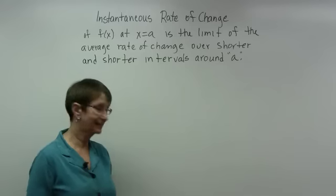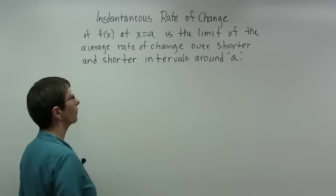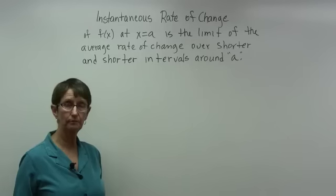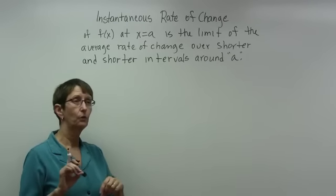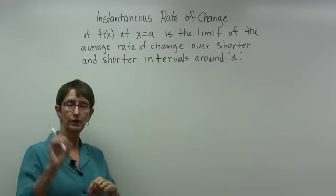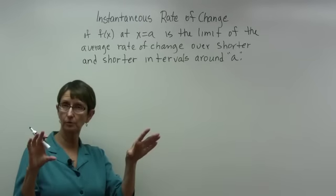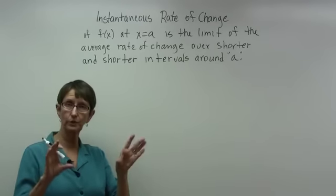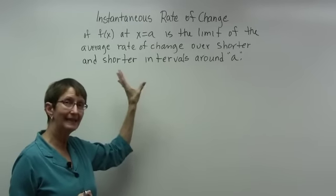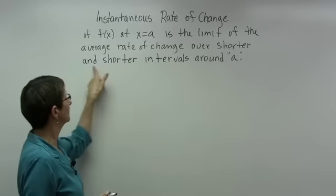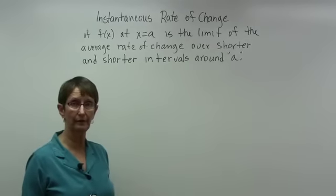Let's look at an example to make this clearer. When we did average rate of change on a data table, we took two points and found the rate of change or the slope — change in y over change in x. That's exactly what we do with instantaneous rate of change, but the key is the shorter and shorter intervals around a.